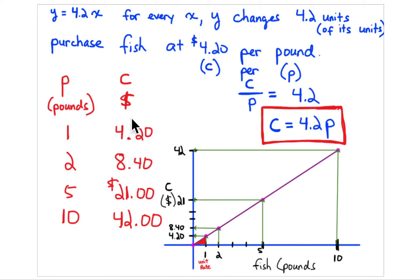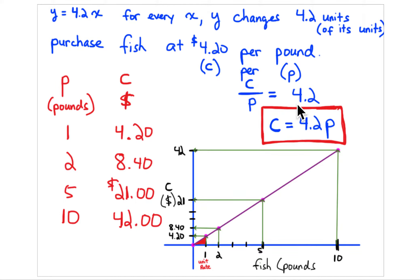Here's the table. We're going to say the x-axis is pounds of fish and calculate how many dollars it costs for each pound. We'll put in a number of pounds, calculate the cost, and then graph it. The equation is written as: cost = $4.20 per pound, or 4.2 per pound, where c is cost and p is pounds of fish.